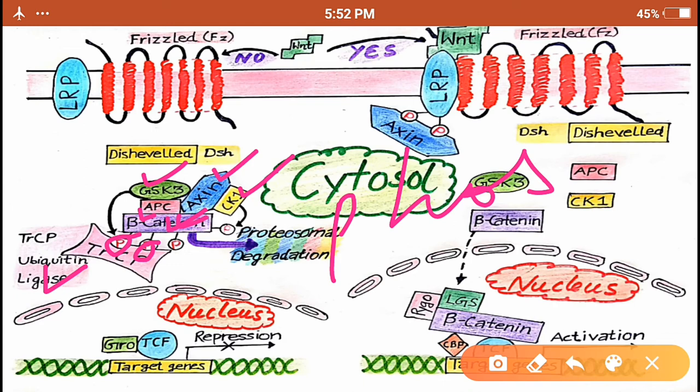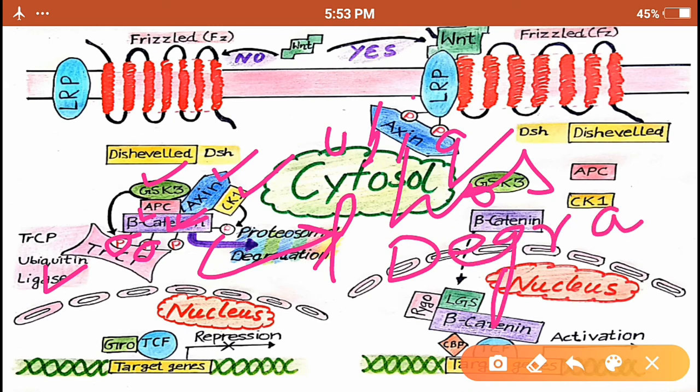So the binding of this ligase, ubiquitin ligase to the beta-catenin tags it, tags the beta-catenin that it is ubiquitinated. The ubiquitinated beta-catenin is then sent to the proteosome for degradation. So that this degraded beta-catenin cannot go into the nucleus and initiate the transcription of the genes.